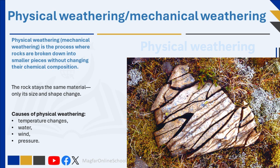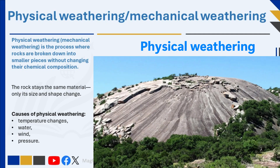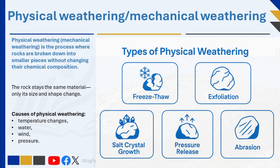Physical weathering, also known as mechanical weathering, is the type of weathering where rocks are broken down into smaller pieces without changing their chemical composition. In other words, the rock stays the same material — only the size and shape of the rock changes. This type of weathering is mainly caused by physical forces such as temperature changes, water, wind, pressure, and the actions of plants or animals.